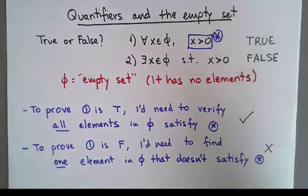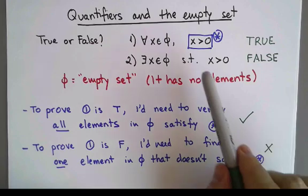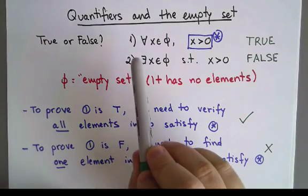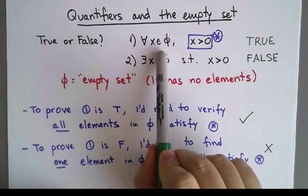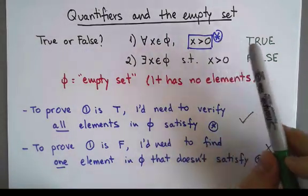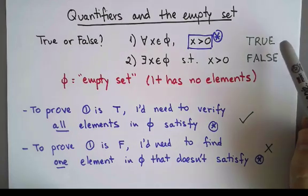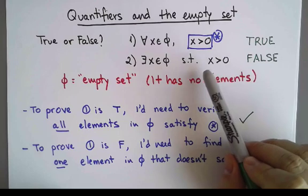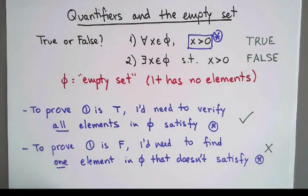The moral of the story is that it doesn't really matter what this expression that I call star was. If I have a statement that says for every x in the empty set, whatever you want, that's always going to be true. And if I have a statement that starts by saying there exists x in the empty set such that whatever you want, that will always be false.